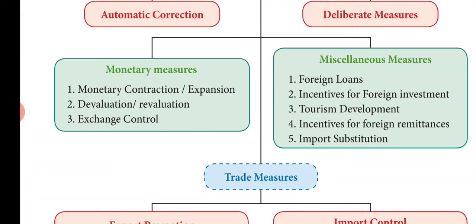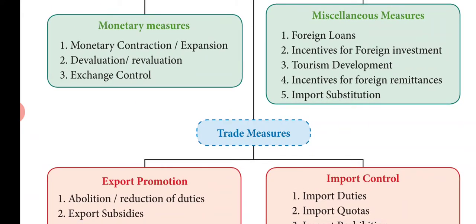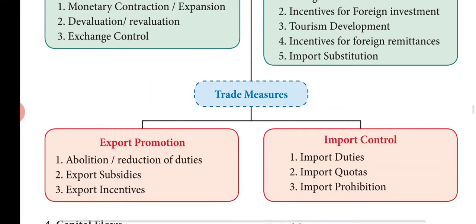Monetary measures include devaluation, revaluation, and exchange control. Miscellaneous measures include foreign loans, incentives for foreign investment, tourism development, incentives for foreign remittances, and import substitution. Trade measures include export promotion and import control.